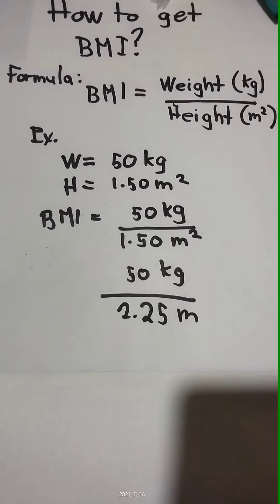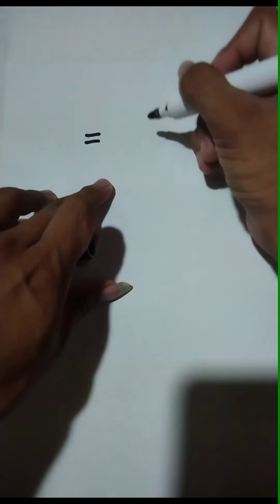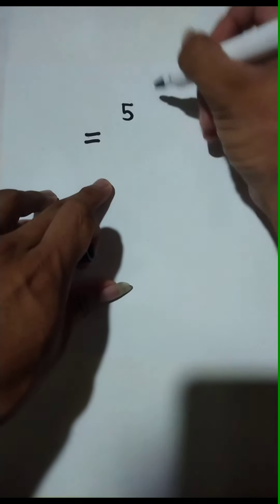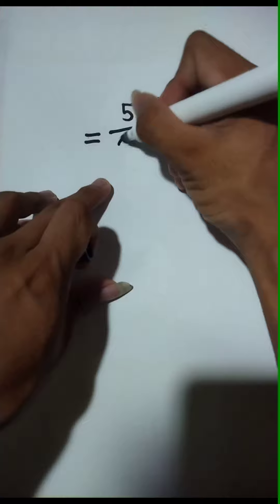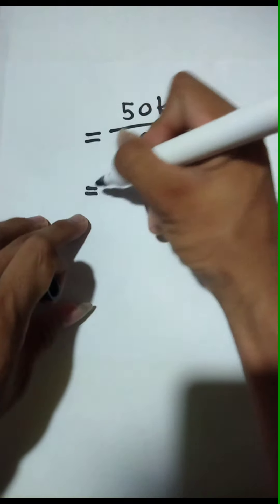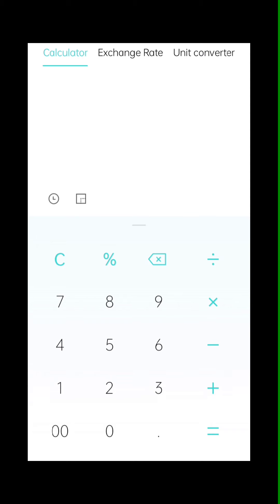Let me write it on another paper to make it clearer. So 50 kg over 2.25 meters. The answer for this will be my final BMI or body mass index. So 50 divided by 2.25...